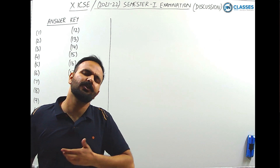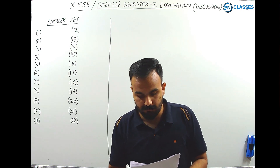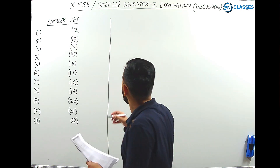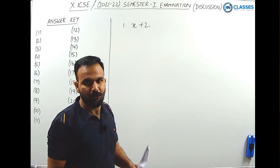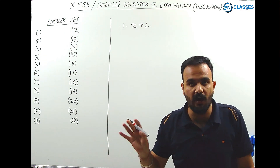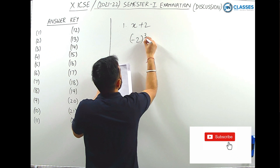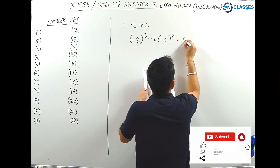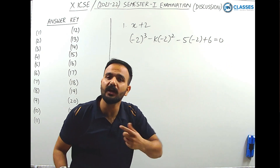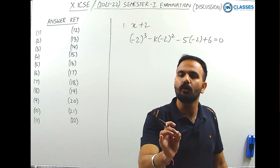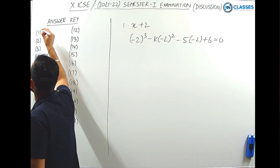Let's start the discussion from question 1: if x+2 is a factor of the polynomial, find the value of k. Using the factor theorem, we place x = -2, so the polynomial equals 0. So: (-2)³ - k(-2)² - 5(-2) + 6 = 0. This gives an equation in terms of k. Solving it, k = 2, which means option B is the correct answer.